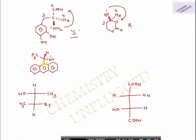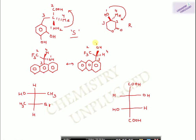In another example, the lowest priority group is not on the back side, so we apply the single swap rule — swapping H with OH. After the swap, hydrogen is on the back side. We then apply priority rules; the sequence appears anticlockwise (S configuration). But because we performed a single swap, we reverse the configuration — the actual configuration is R.